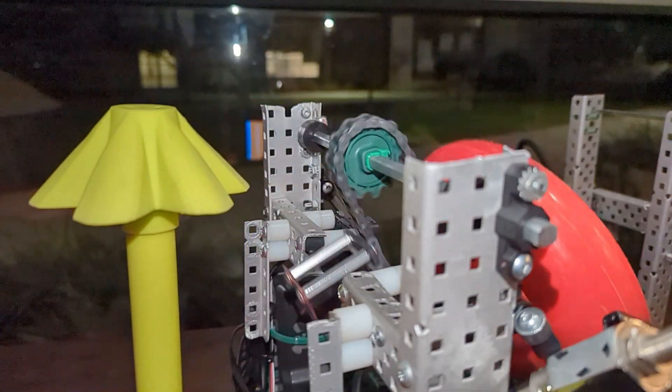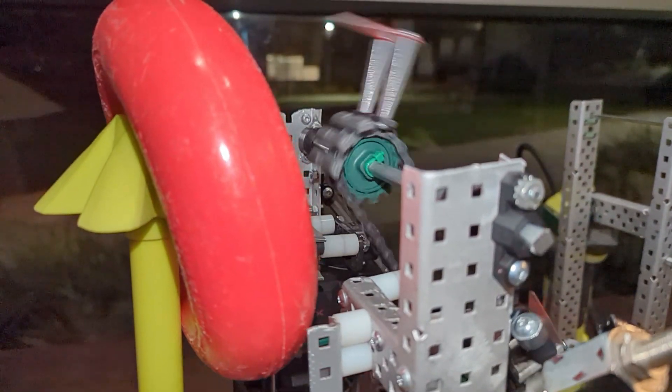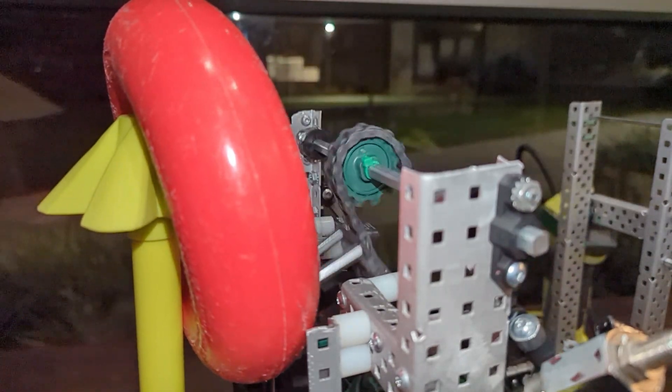Now if you don't have flex wheels, it might look something like this when you try to score the ring. This is because the flex wheels aren't there to give it a little extra boost to get onto the goal better.